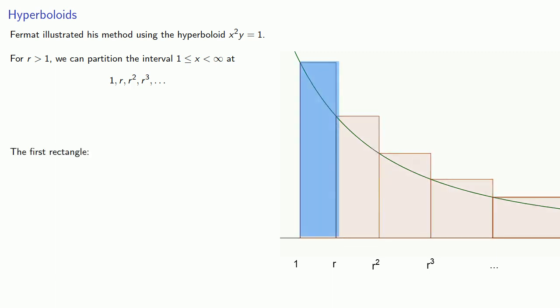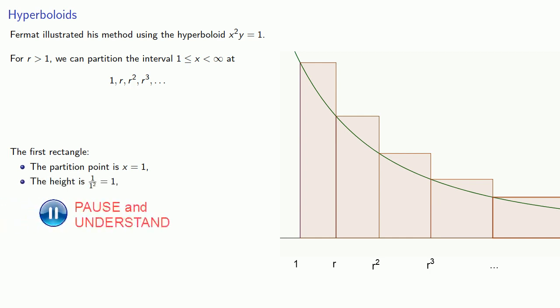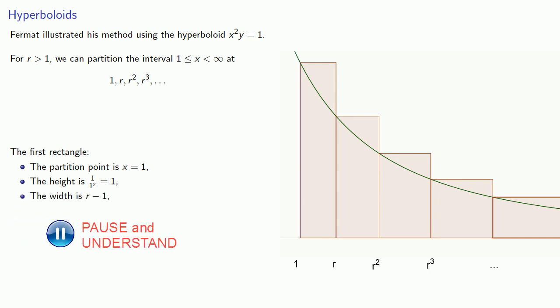And then we can form rectangles in each of these regions. So for this first rectangle, the partition point is x equals 1, and the height 1 over 1 squared, or 1, the width is r minus 1, and so the area 1 times r minus 1. So we want to find the total areas of all the rectangles. So we'll start off with the area of that first rectangle.